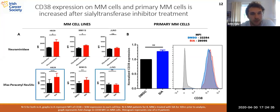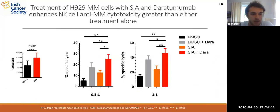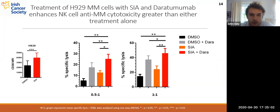We therefore decided to investigate whether this effect was worth combining with daratumumab, the monoclonal antibody which binds to CD38. We chose the H929 cell line, where we had seen a strong increase in CD38 expression upon desialylation, and combined desialylation with daratumumab treatment. At both E:T ratios tested, NK cells were more readily able to lyse the H929 cells when pre-treated with both the sialyltransferase inhibitor and daratumumab, compared to sialyltransferase inhibitor or daratumumab treatment alone.